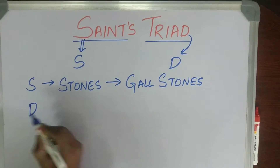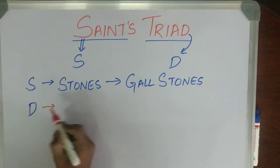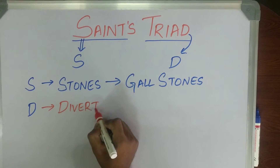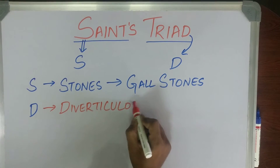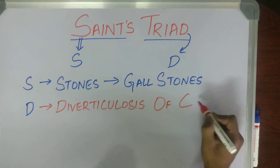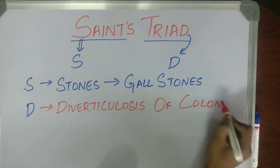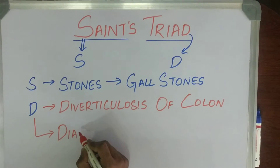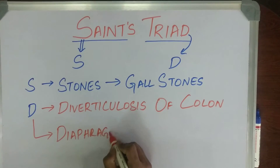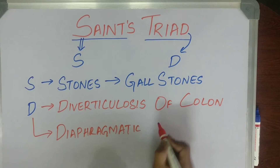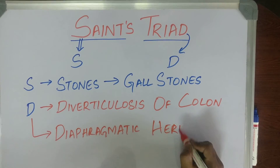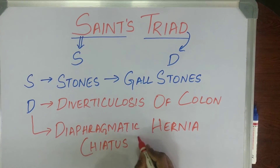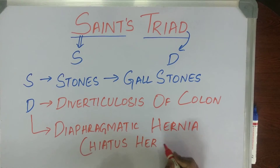What is D? D is Diverticulosis of Colon. Similarly, D also means Diaphragmatic Hernia.